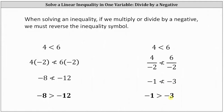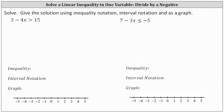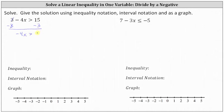So going back to our two examples, let's solve the first linear inequality. We begin by subtracting three on both sides of the inequality to isolate the variable term negative four x. Notice we're not multiplying or dividing by a negative, and therefore we do not reverse the inequality. Simplifying, three minus three is zero, giving us negative four x greater than 12.